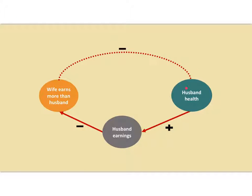Think about it: if the man's health is not very good, that can hurt the amount he earns or his ability to work at all, and maybe he will earn less. And if the husband is earning less while the wife's earnings stay the same, chances are she will earn more than he will. So if his earnings go down, relatively speaking her earnings are higher, increasing the likelihood. We get this negative correlation simply from lower husband health leading to lower husband earnings leading to higher wife earnings relative to husband.